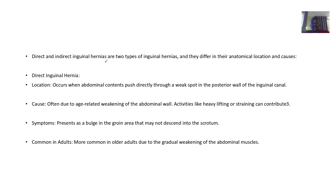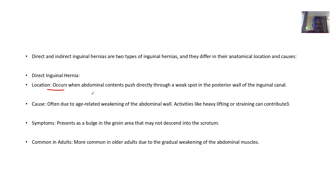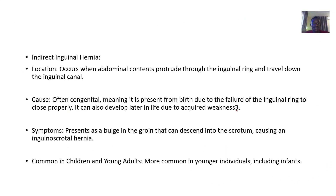For the location of the direct inguinal hernia, it occurs when the abdominal contents push directly through a weak spot in the posterior wall of the inguinal canal — that is, at the back. The direct one is at the back.